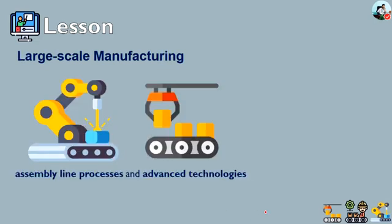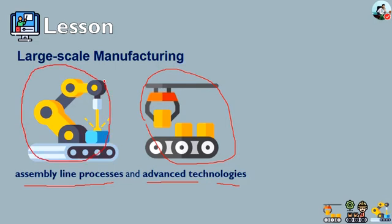Large-scale manufacturing allows for the mass production of goods using assembly line processes and advanced technologies. As shown here, advanced technologies are used to produce a tremendous amount of products. Efficient manufacturing techniques enable manufacturers to take advantage of economies of scale, producing more units at a lower cost, which affects overall economic output.